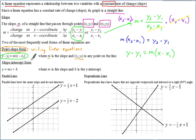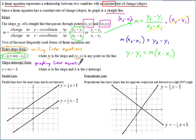Slope-intercept form is another useful form, typically easiest to use when graphing a linear equation or working with a graph. It's written as Y = MX + B. The name 'slope-intercept' comes from the fact that M represents the slope, and B represents the Y-intercept.